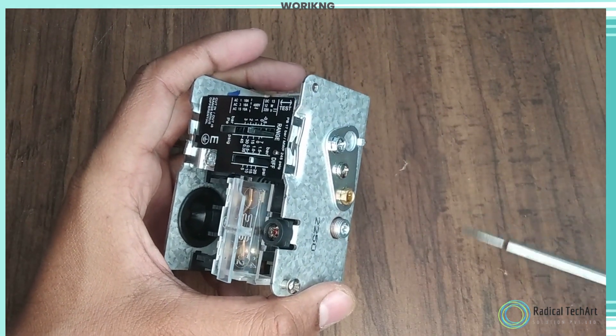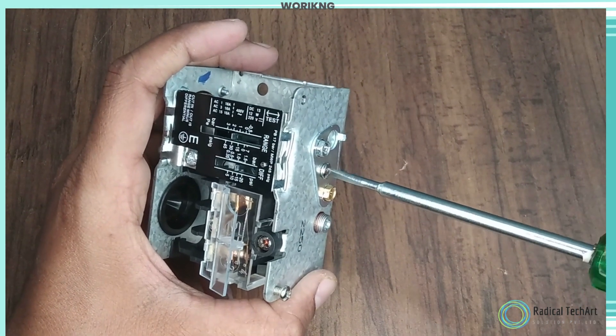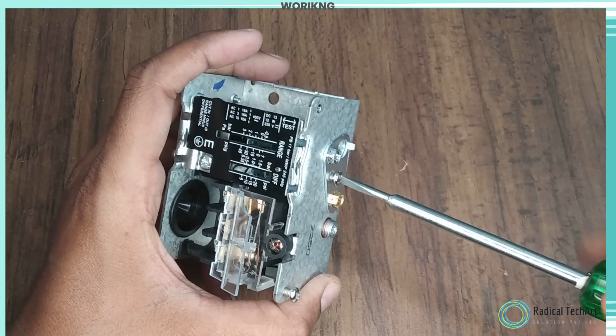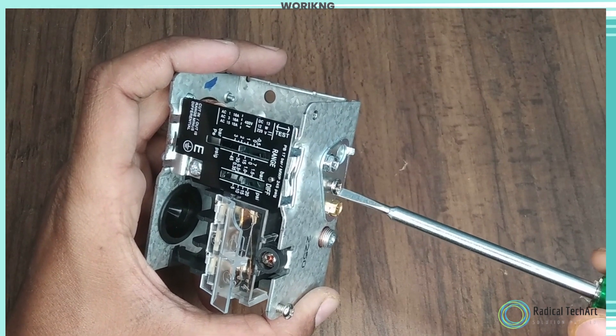Now from this screw we can increase or decrease our pressure range according to our application. From this second screw we can change the differential pressure.